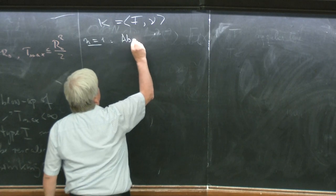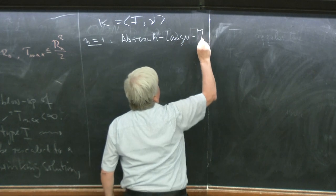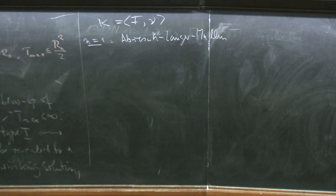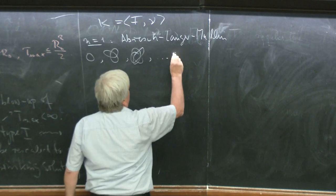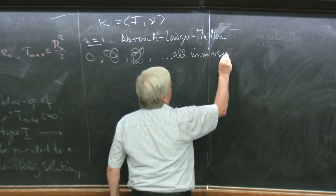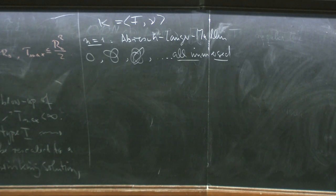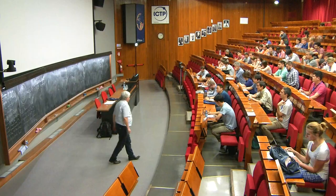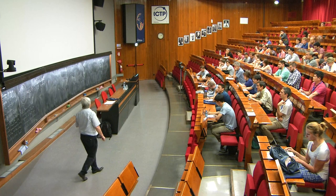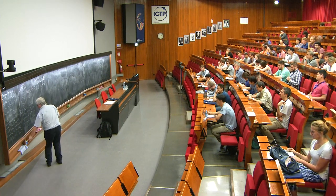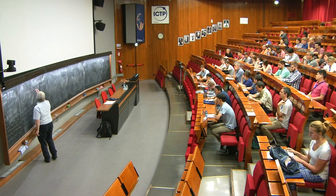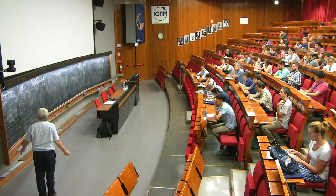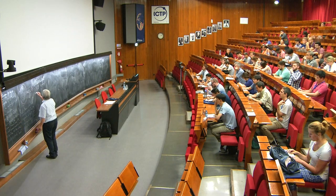These are only the Abresch-Langer-Maling curves. There's just the circle, and there's a one-parameter family which are all immersed. But we already know, from what Carlo told us, that embeddedness is preserved. So in the limit, after rescaling, the worst that could happen is a curve that touches itself, but not one that intersects itself. So the immersed curves are not allowed as possible limiting curves, and only the circle remains. If this is the rescaling of the singularity, then obviously the theorem is true — in this case, we are done.